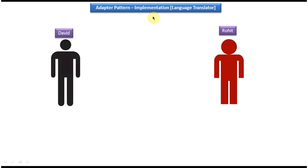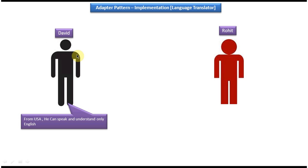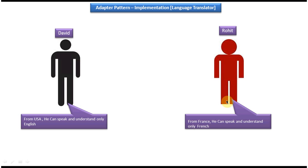First we will see the Adapter Design Pattern scenario. On the left side you can see a person called David and on the right side you can see a person called Rohit. David is from USA so he can speak and understand only English. Rohit is from France so he can speak and understand only French. David wants to speak something to Rohit and Rohit wants to speak something to David. Currently it is not possible because David knows only English and Rohit knows only French. So these two are incompatible interfaces.